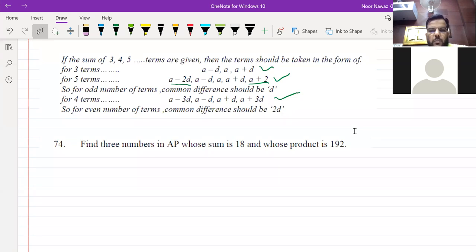So you are saying sum of 3 terms whose sum is 18 and the product is 192. So you are saying that the terms will not be given.